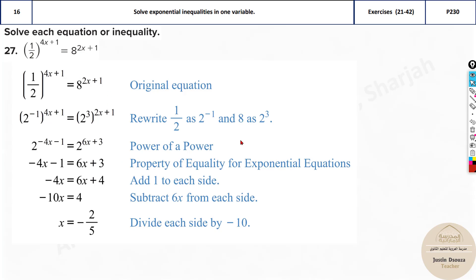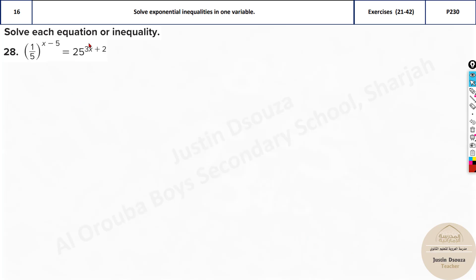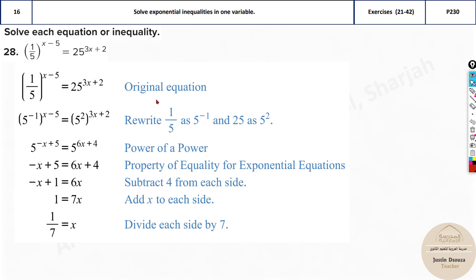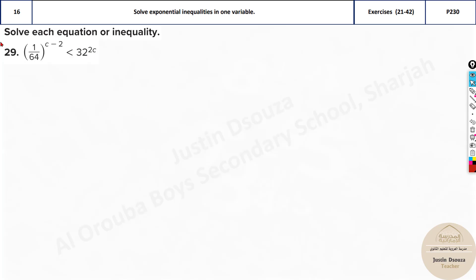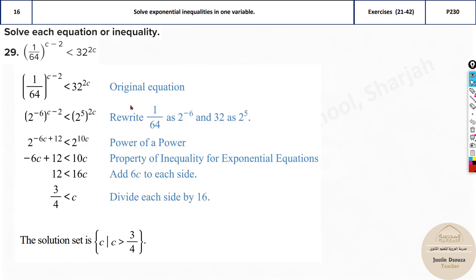Make sure you understand each step, solve by yourself, and then check the answers. Here, 1/5 can be written as 5^(−1), and 25 is 5 squared. Multiply the negative through — it becomes −6 + 5 — and the other term is multiplied by 2. For inequality problems, keep the inequality sign as it is and solve.